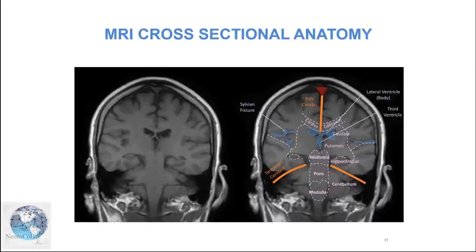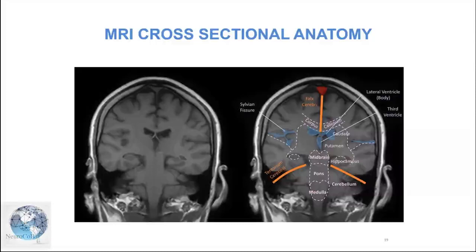We see the brain tissue with grey matter on the outside and white matter inside, plus some deep grey matter embedded deep inside. If the CSF appears dark on a scan, this usually indicates a T1-weighted scan. On a T1-weighted image, grey matter appears dark on the outside, white matter is relatively brighter, and CSF is dark.